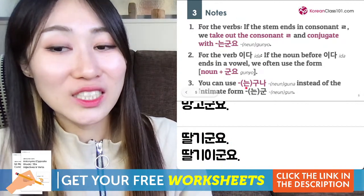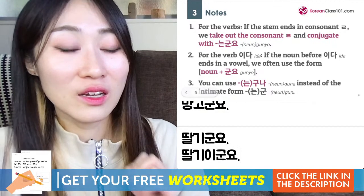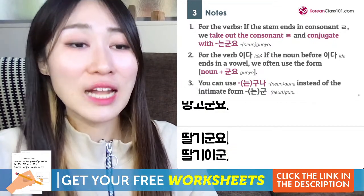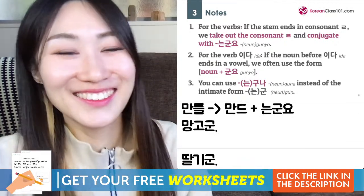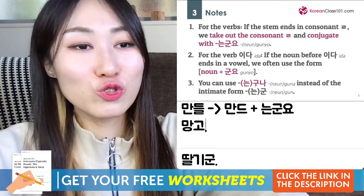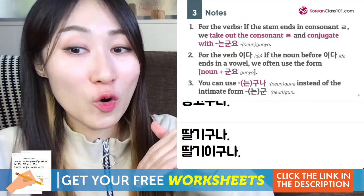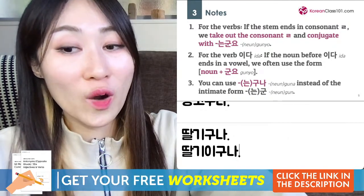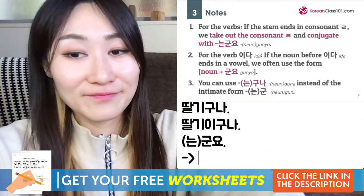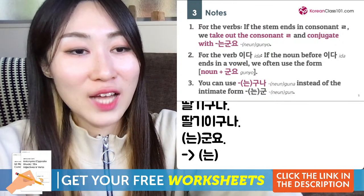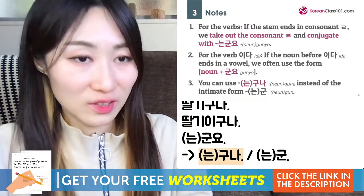Number three: you can use 구나 instead of 군 in the casual intimate form. So in casual speech, instead of 군요 (polite) you say 군 or 구나. For example, casually: 딸기군 or 딸기구나, 망고군 or 망고구나. In daily life, 구나 is actually more common than 군. So: 군요 is polite, 군 or 구나 are casual — and 구나 is more common.